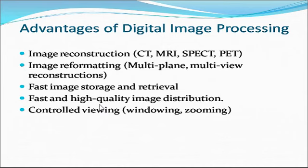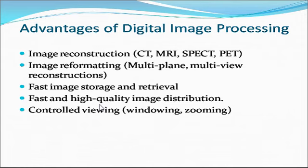There are different advantages of digital image processing in real life. In the medical field, technologies like CT, MRI, and PET all use digital image processing. In research areas, many fields use digital image processing technology. Other benefits include fast image storage and retrieval, fast and high-quality image distribution, and controlled view window zooming. For example, if you develop a website and the client requires it to be responsive, you can use digital image processing techniques.